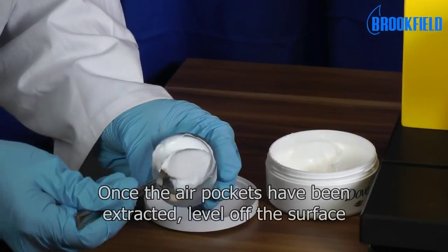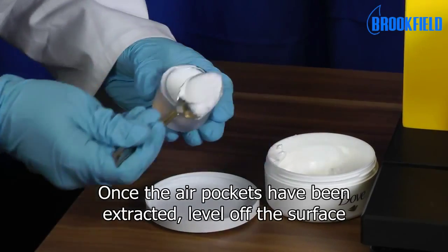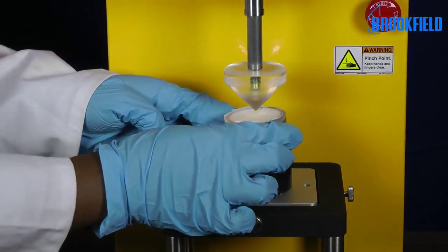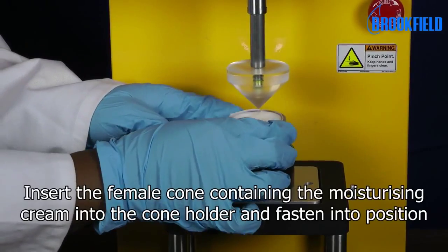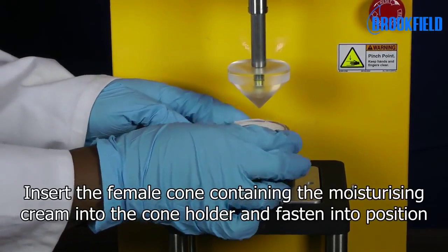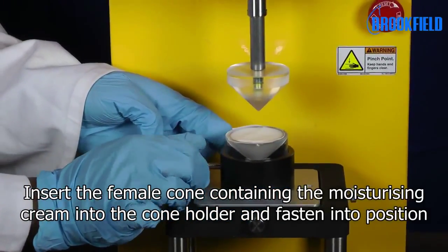Once the air pockets have been extracted, level off the surface. Insert the female cone containing the moisturizing cream into the cone holder and fasten into position.